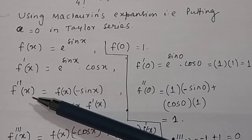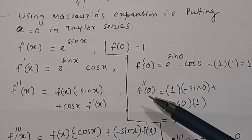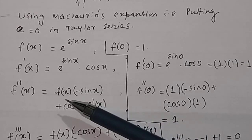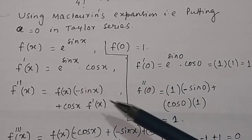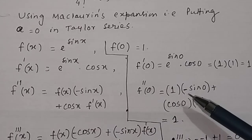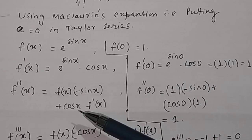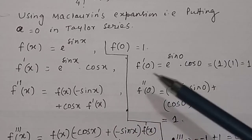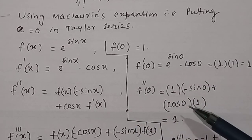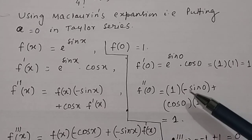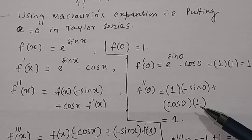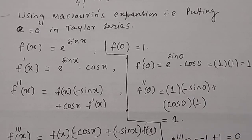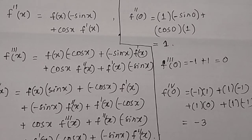Putting x equal to 0 in the second derivative: f''(0) equals f(0) times minus sin 0 plus cos 0 times f'(0). Since f(0) equals 1, sin 0 equals 0, cos 0 equals 1, and f'(0) equals 1, we get 1 times 0 plus 1 times 1 equals 1. So f''(0) is equal to 1.